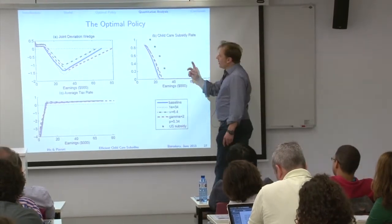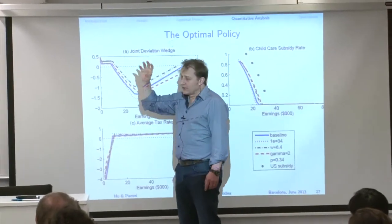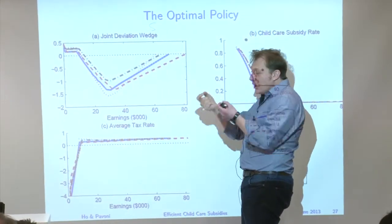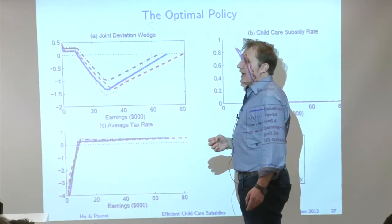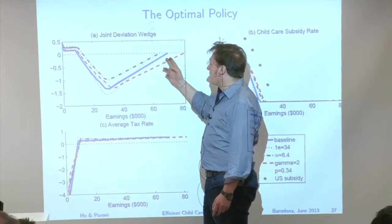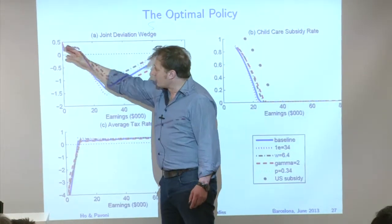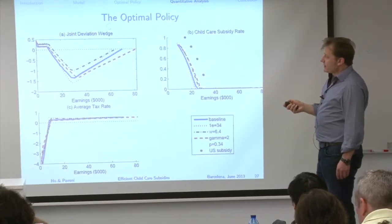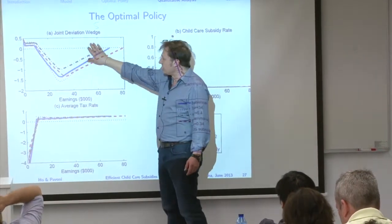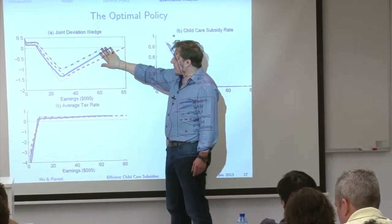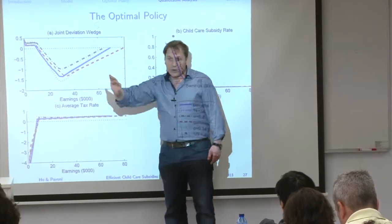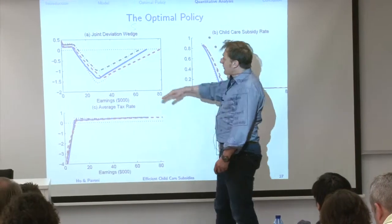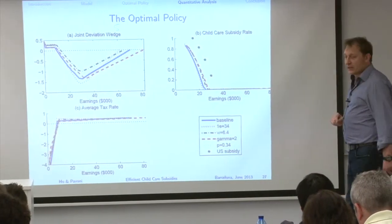Focusing on the childcare subsidy rate and how it changes with earnings: across all parameterizations, the result is pretty robust. It is a sliding scale, starting very large at low income levels, consistent with existing schemes. The optimal ones are a bit less generous than existing programs — the dots representing the median US state start at 100% and decrease, uniformly larger than our optimal rates.